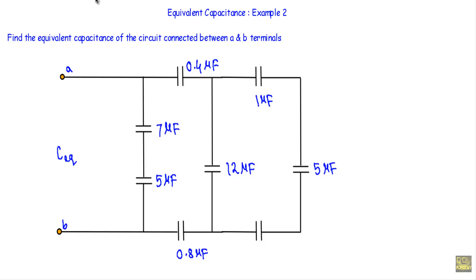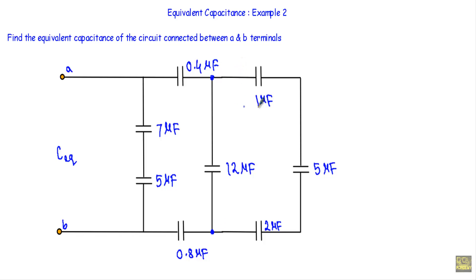Now let me proceed with the circuit example. We have to calculate the equivalent capacitance between the two terminals, so I will start my simplification from the right side of the circuit. With respect to those two terminals, we have three capacitors — 1 µF, 5 µF, and 2 µF — connected in series, so I can reduce them to a single equivalent capacitor.